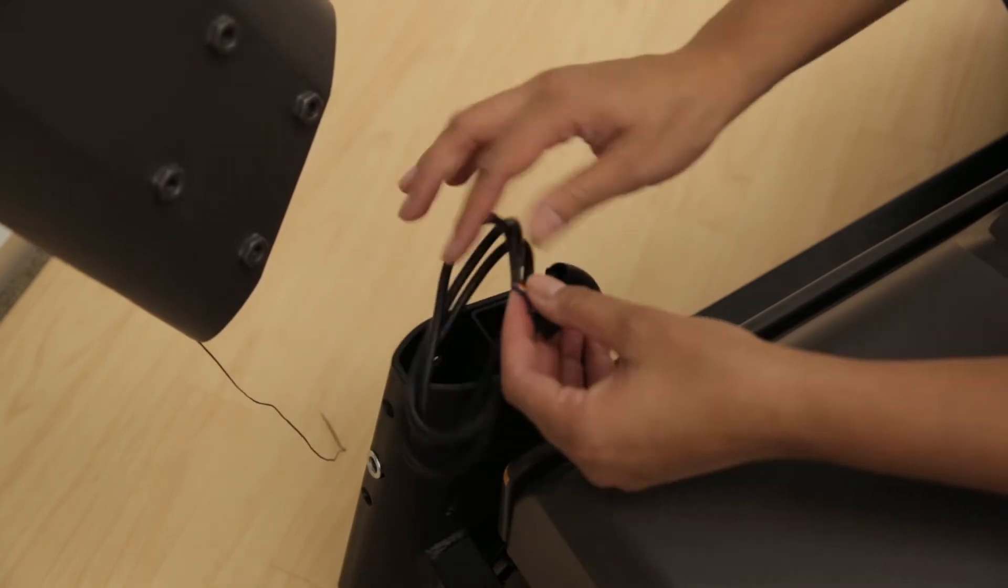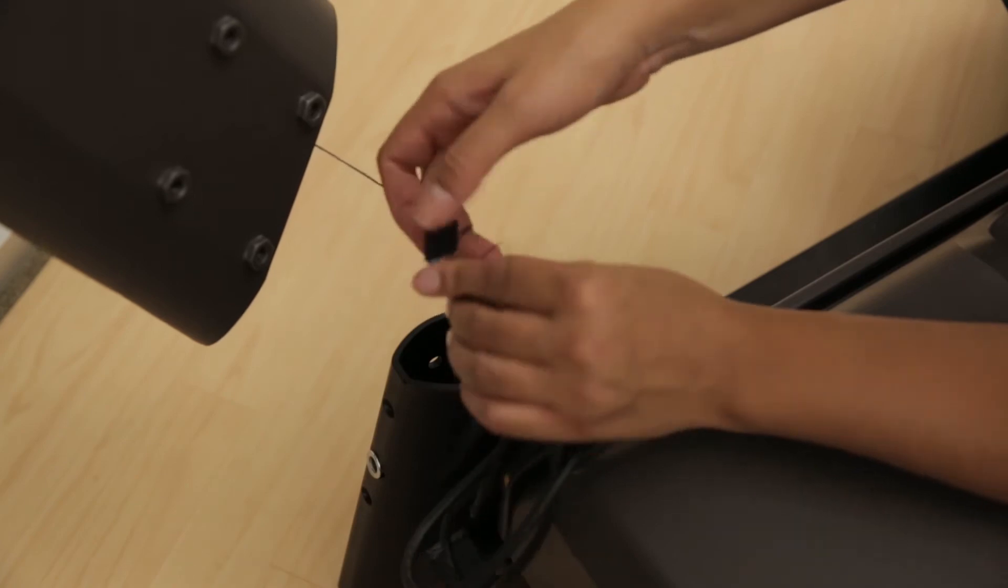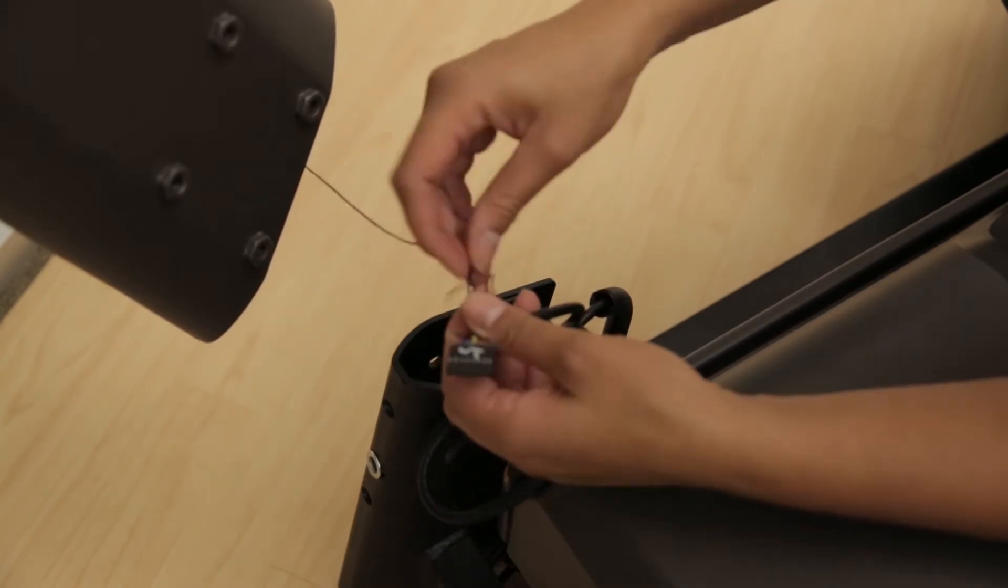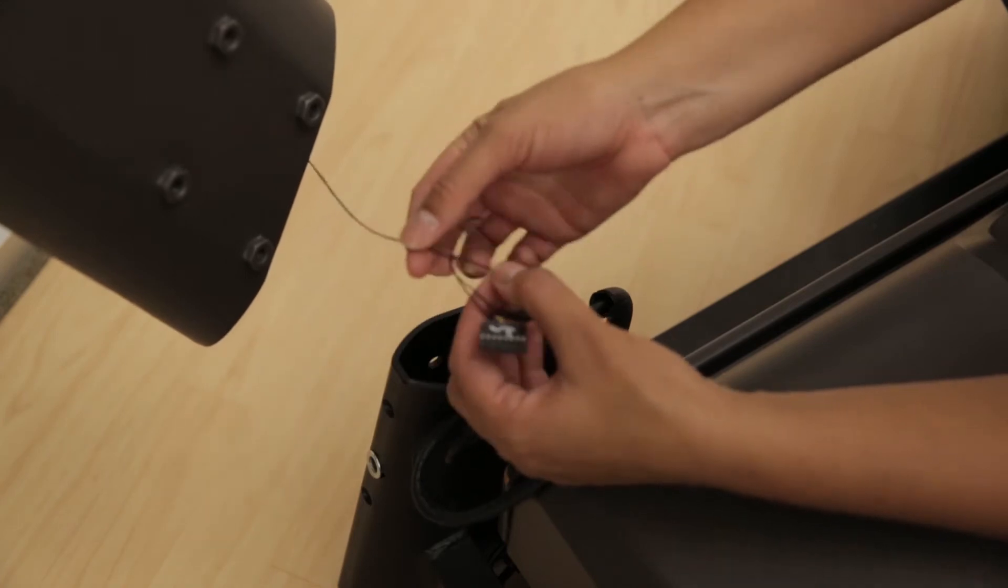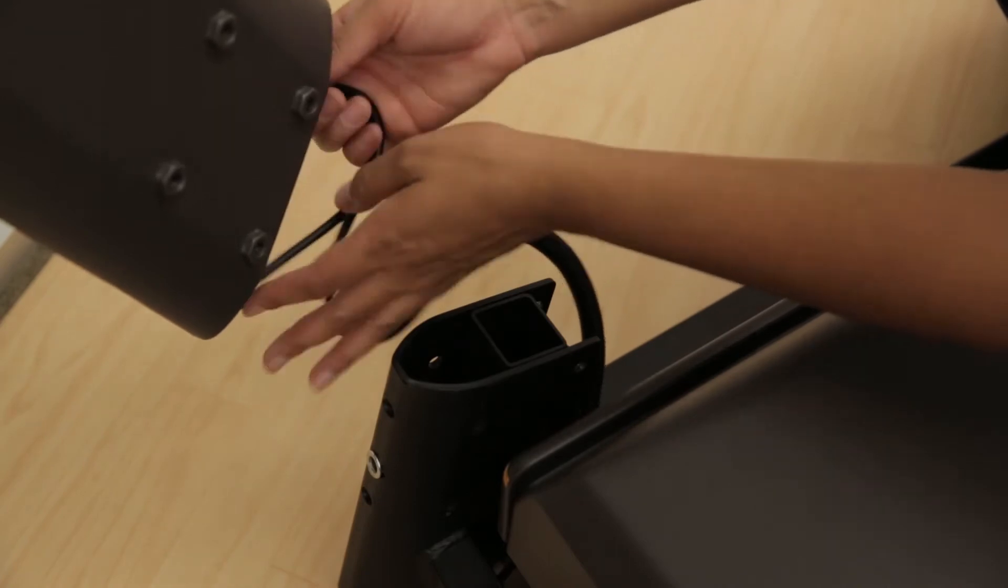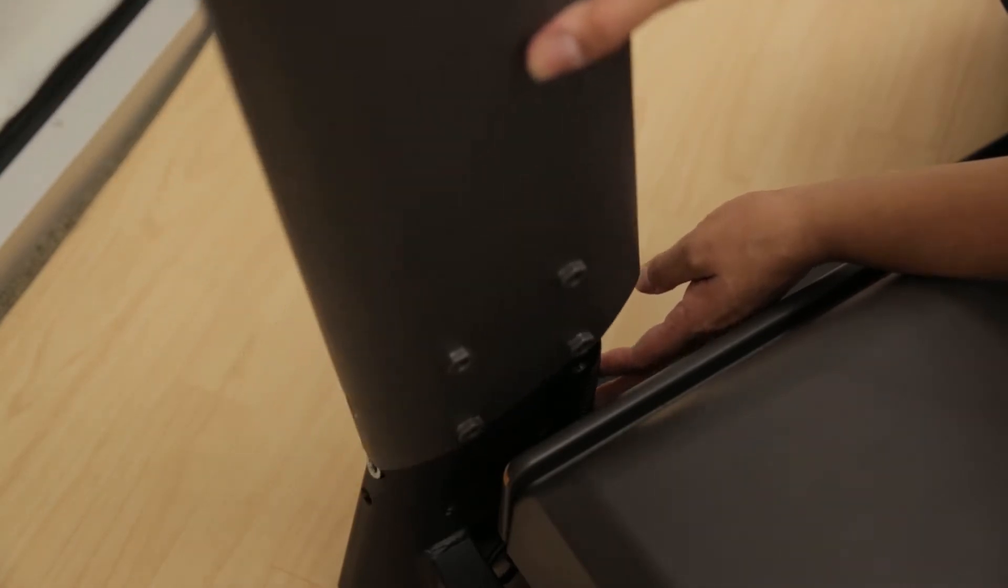On the right side of the unit, hold the console cable from the base frame. Attach the cable to the lead wire at the bottom of the right console mast and tuck the cable into the mast. Slide the mast onto the base frame, paying attention not to pinch the cable.